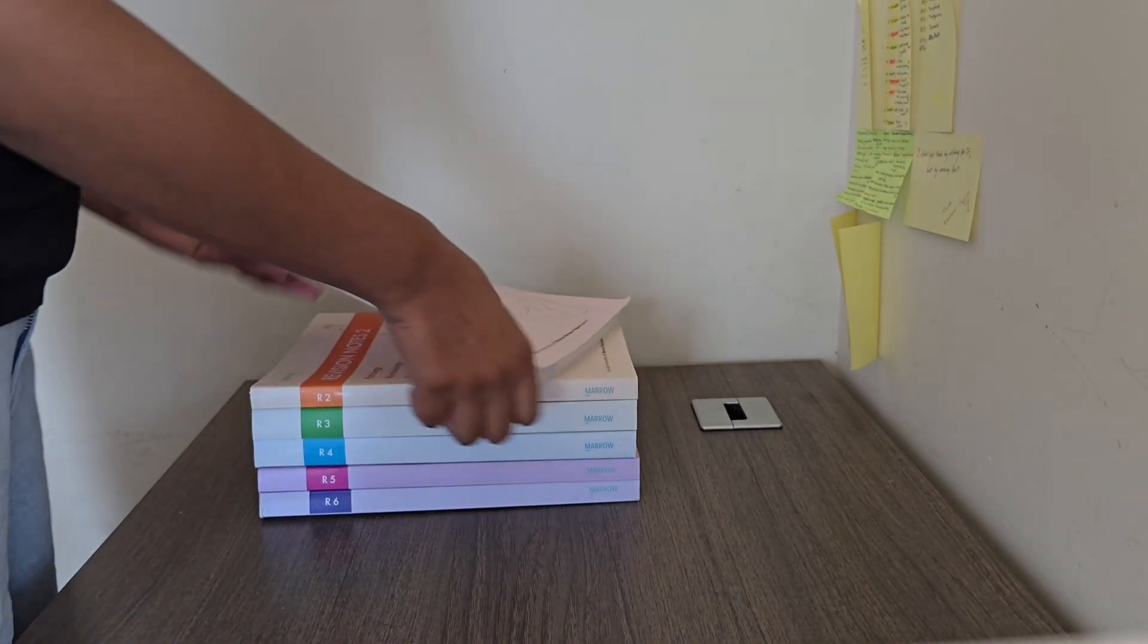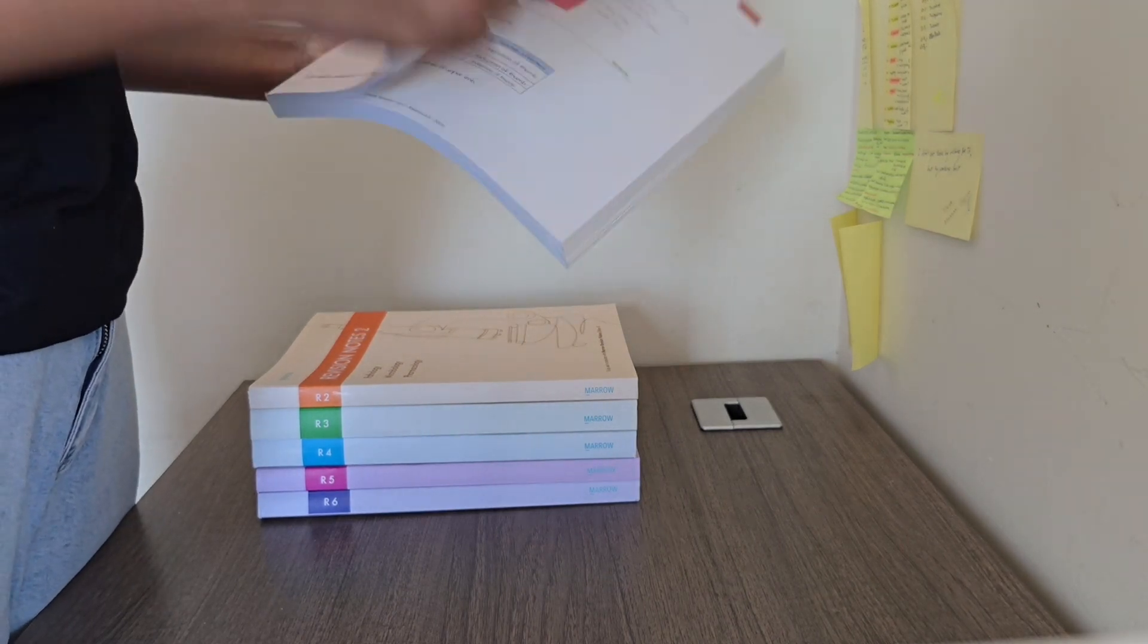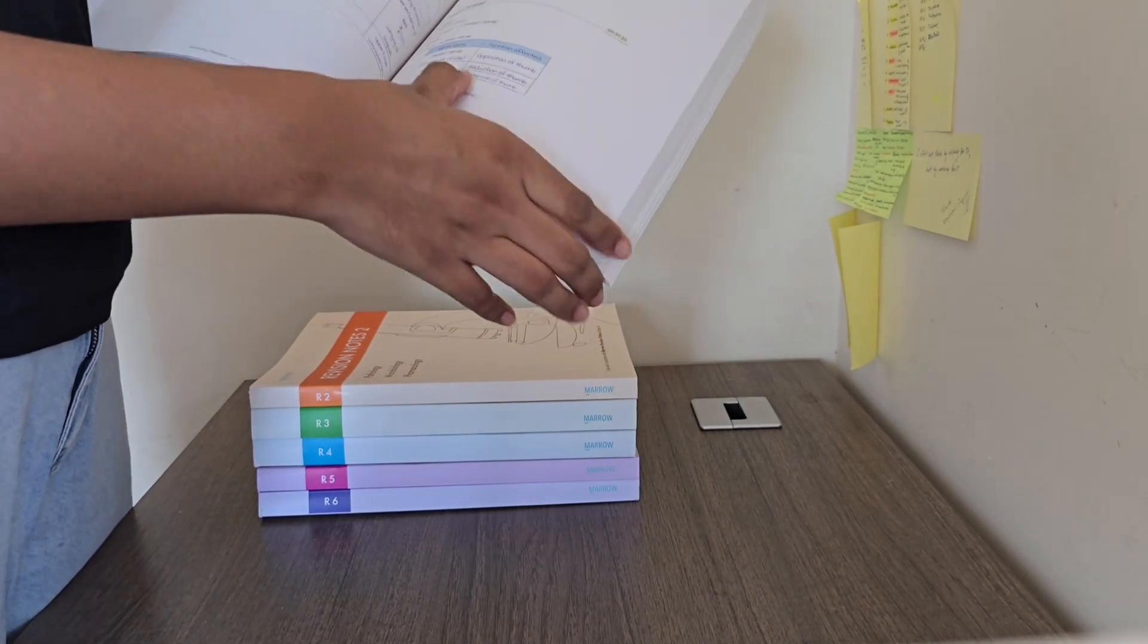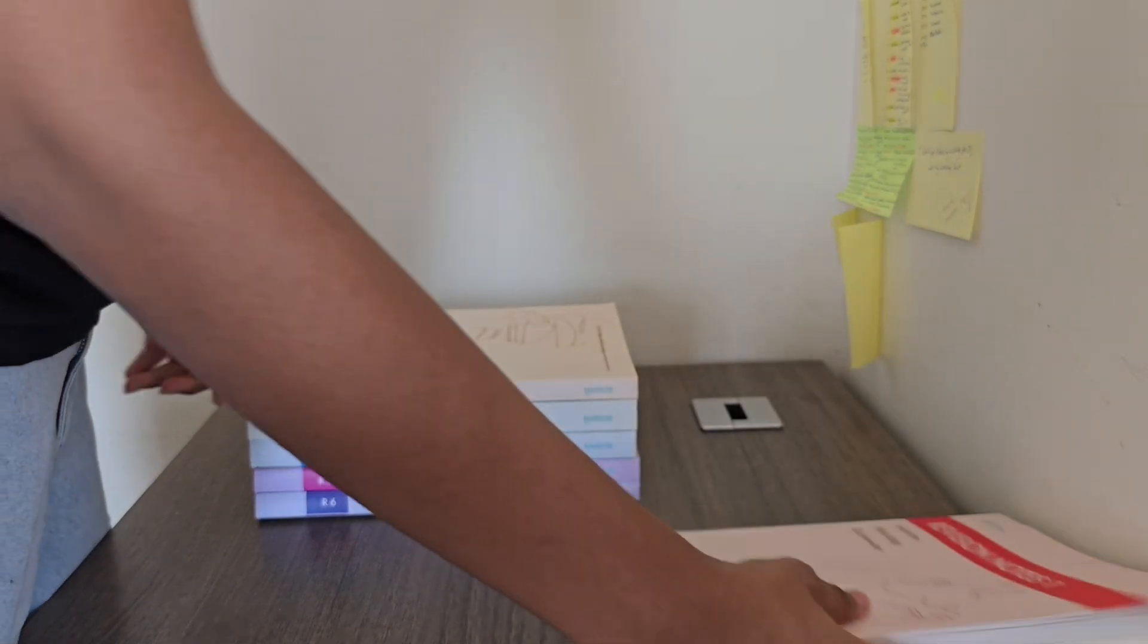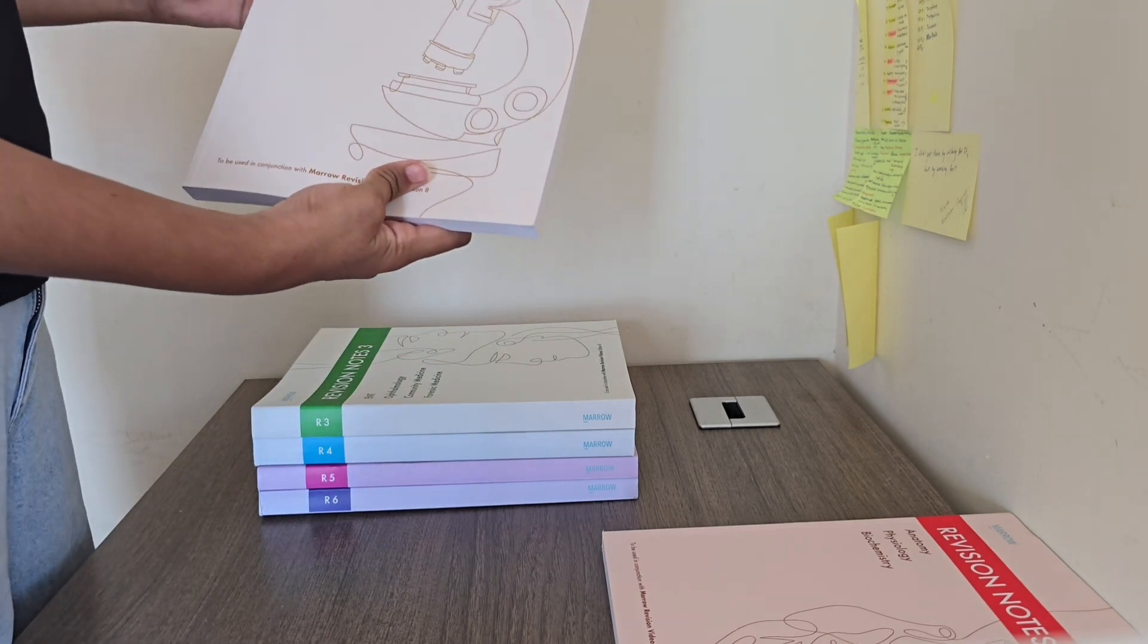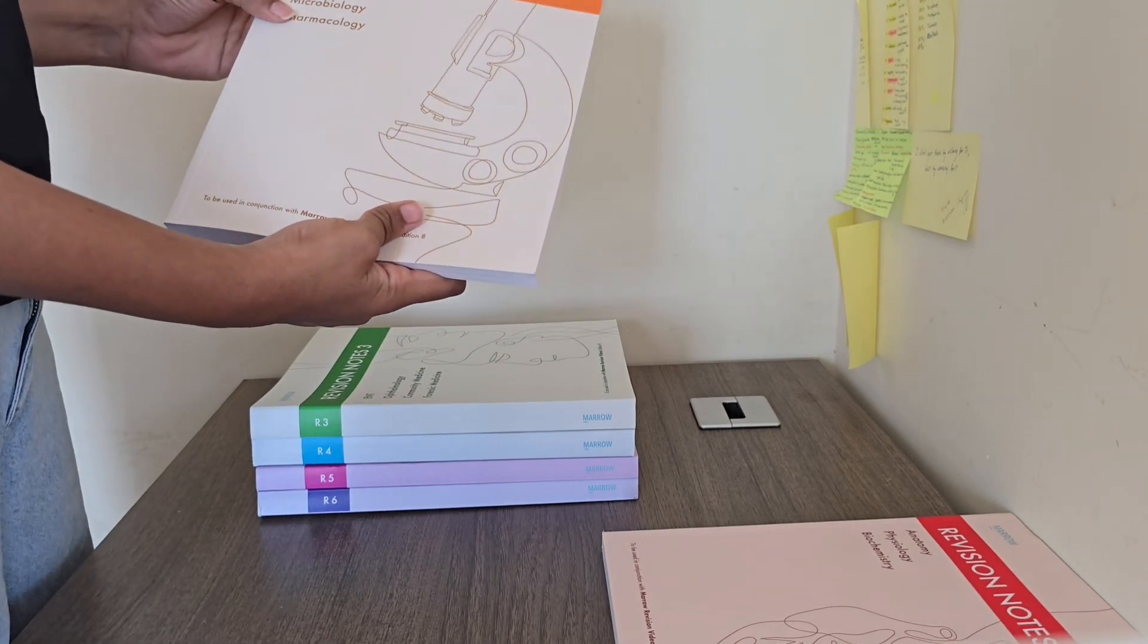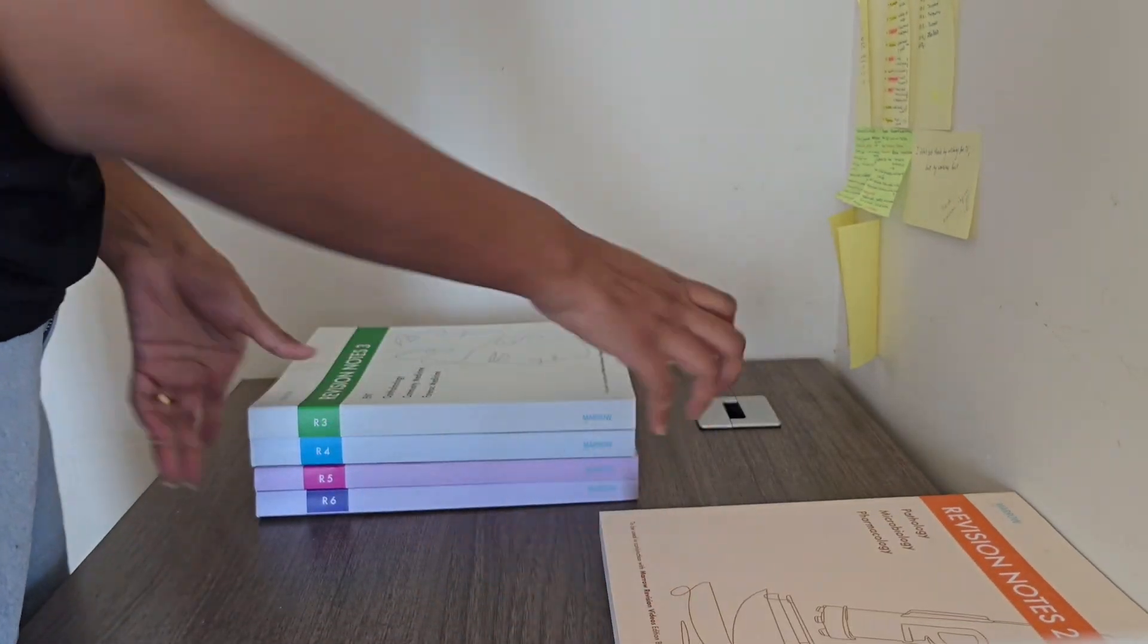First we have anatomy, physiology, and biochemistry - all the first year subjects are together. Then we have pathology, microbiology, and pharmacology. I thought pathology and medicine might be in the same book but they've given it year-wise.